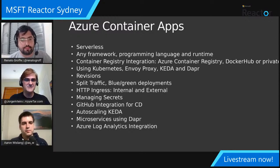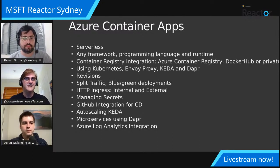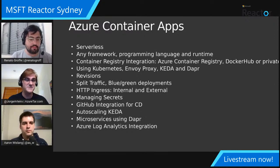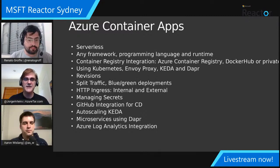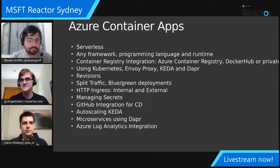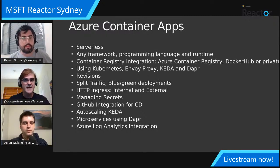You can use Envoy Proxy for ingress, KEDA for scaling, and DAPR for microservices. You have all that integration to do traffic splitting — like you have on App Service with deployment slots. You can do blue-green deployments, integration with secrets, custom domains, and certificates — all coming very soon. How do you see that, Aaron, for developers — how they can use it to get started?